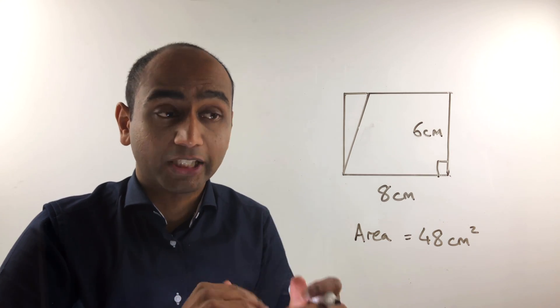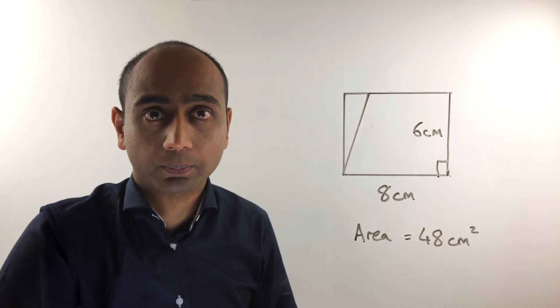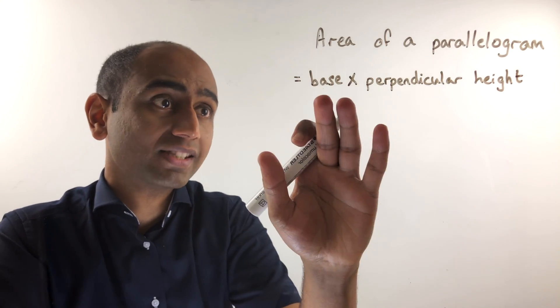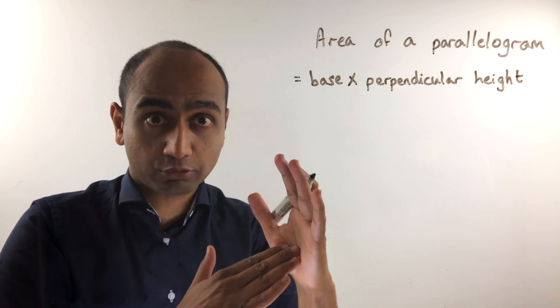The key thing then is to make sure you are multiplying a base by a perpendicular height. So the general formula for the area of a parallelogram is simply base times perpendicular height. Remember perpendicular means at right angles.